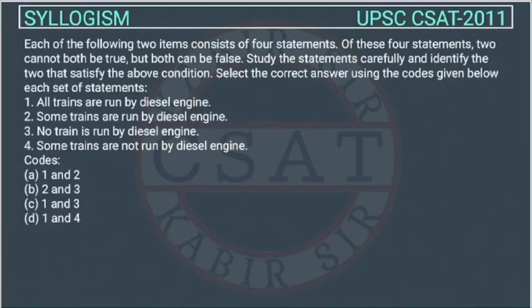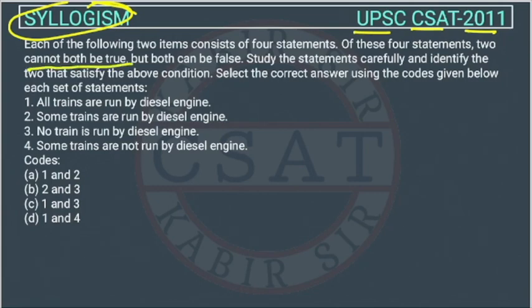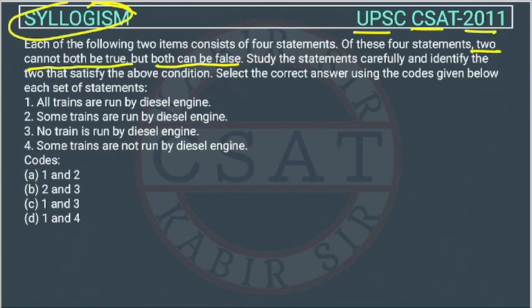This is a syllogism question asked by UPSC in the CSET exam of 2011. Each item consists of four statements, and we have to find which two statements cannot both be true but both can be false. In 2011, around two questions were asked from this type. Let's first read the statements.